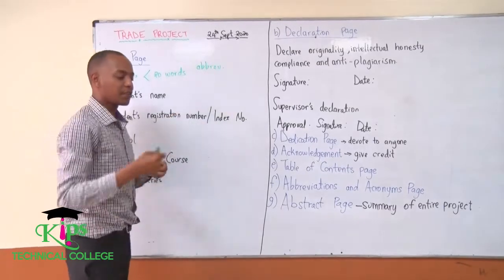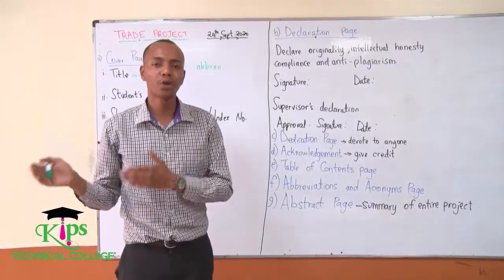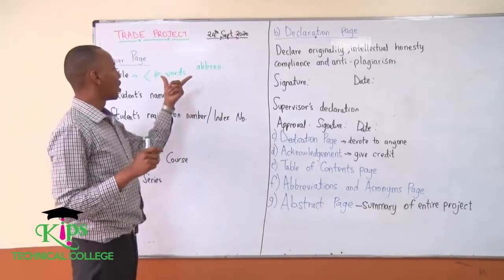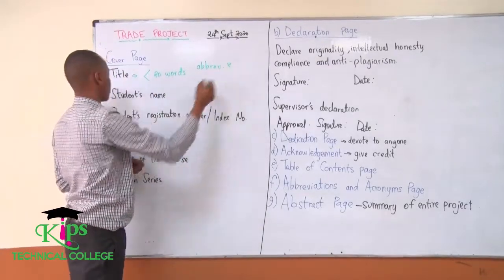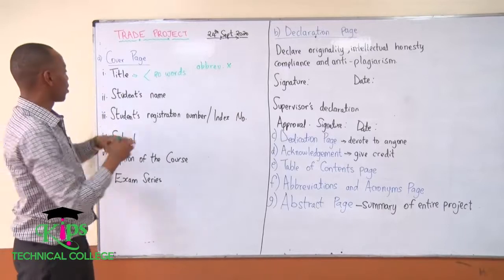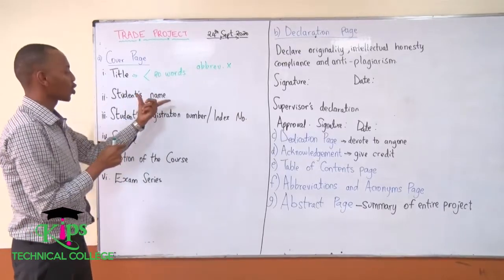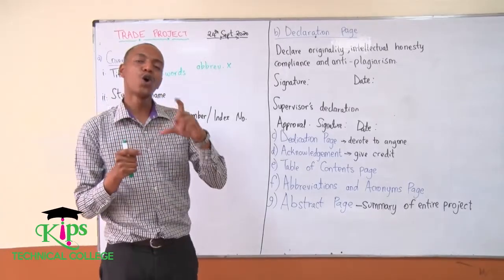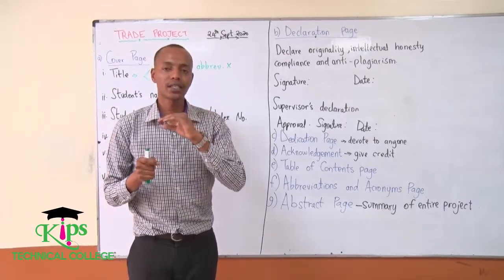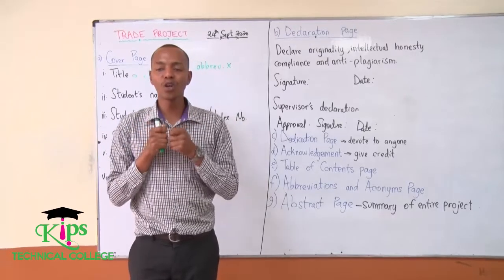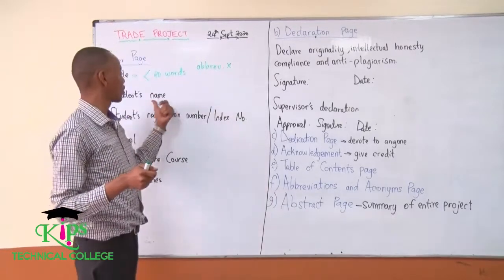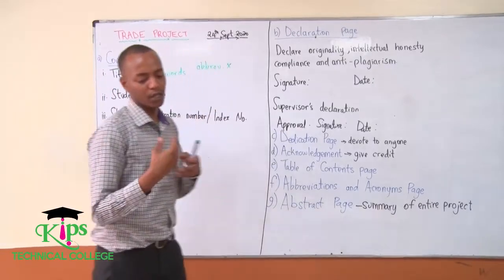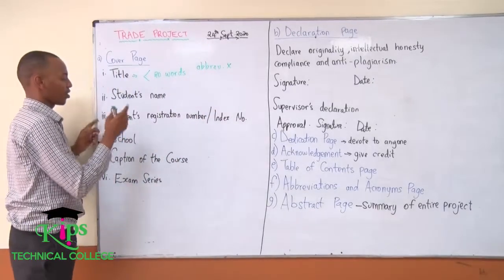For example, if you're investigating a company like Kenya Commercial Bank, don't say KCB Bank Group — don't use those abbreviations. Still on the cover page, you also include your name. Your name must appear the way it appears on your index or your ID. The way you write your index number should be the same way that you write your name. Don't use any other names that don't go with your registration.